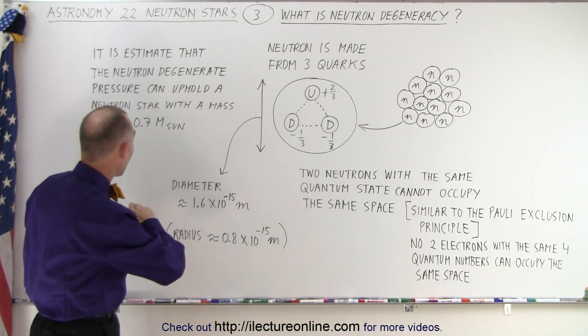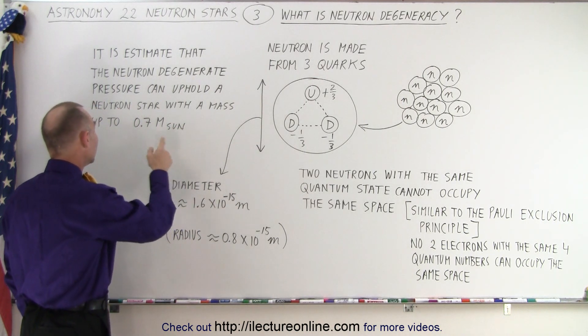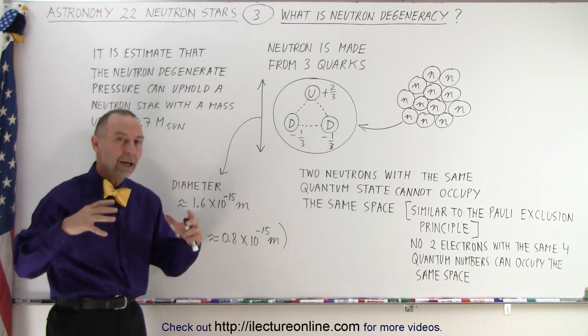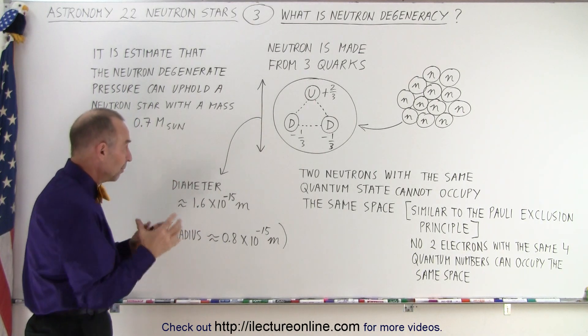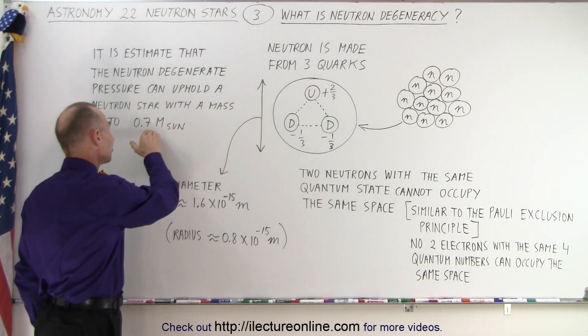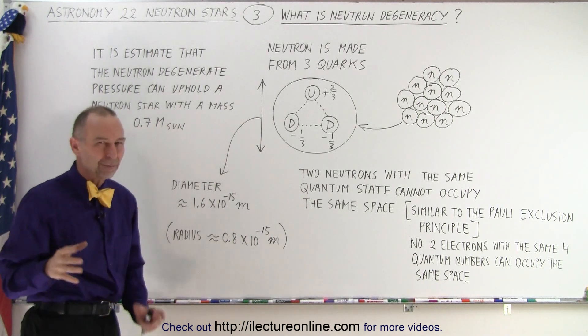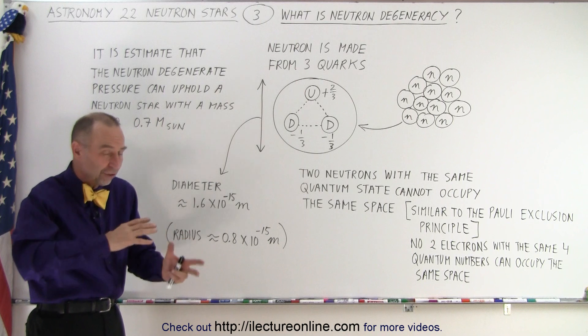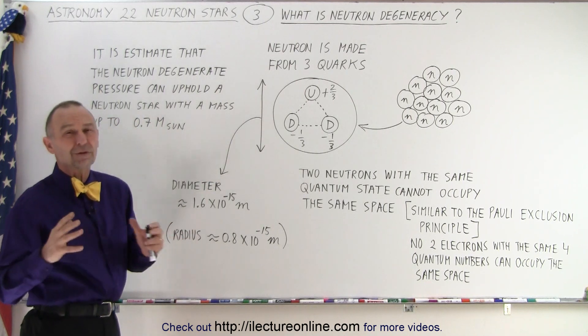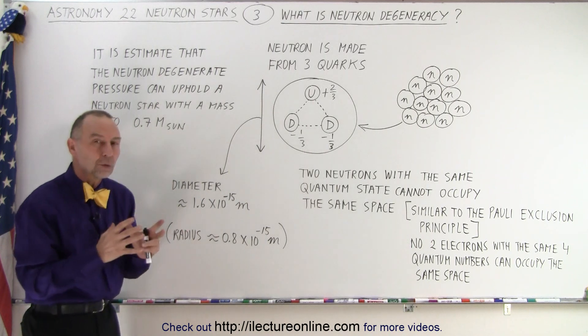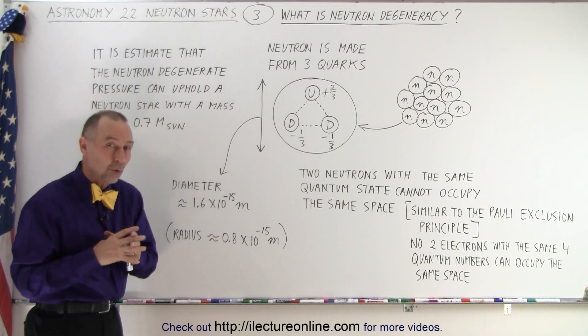It turns out that some calculations were done, and it was estimated that it can only account for upholding a mass of a neutron star if the mass did not exceed 0.7 times the mass of the sun. Remember, a neutron star is about 12 miles across or 20 kilometers across. And we know that the mass of a neutron star falls somewhere between 1 and 2.5 times the mass of the sun.